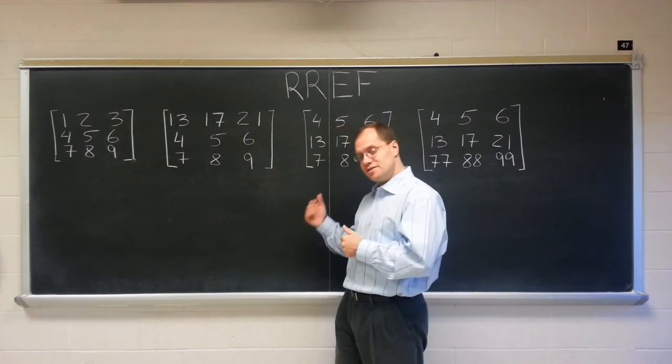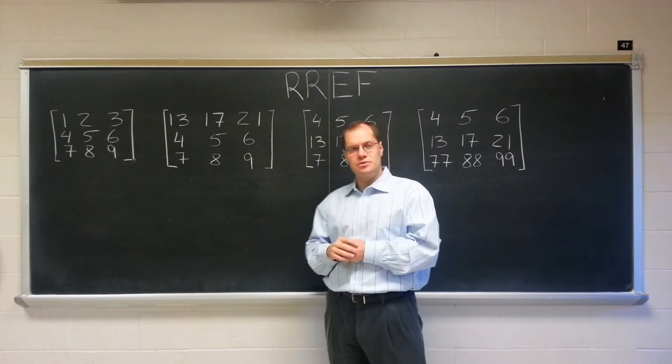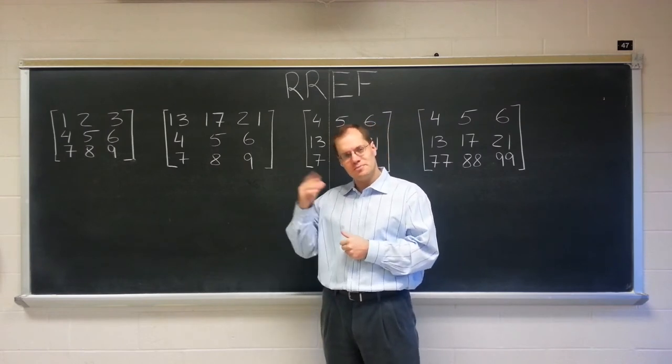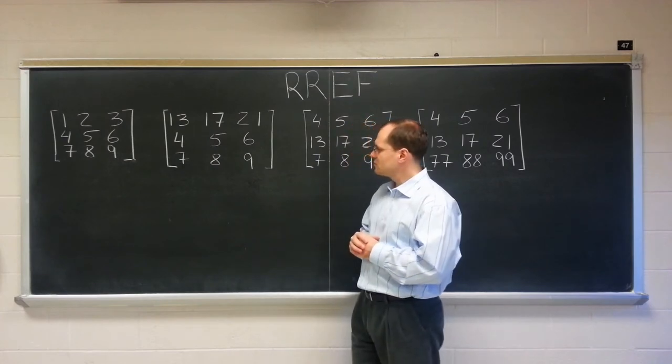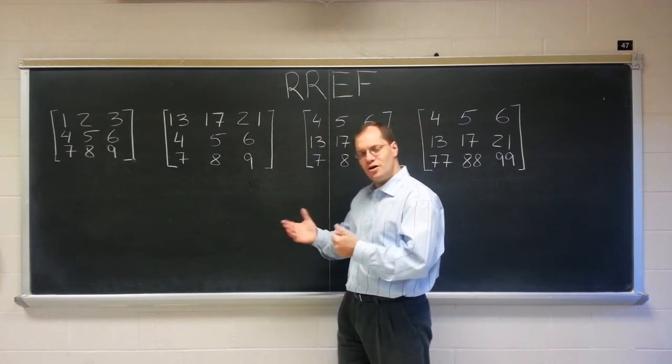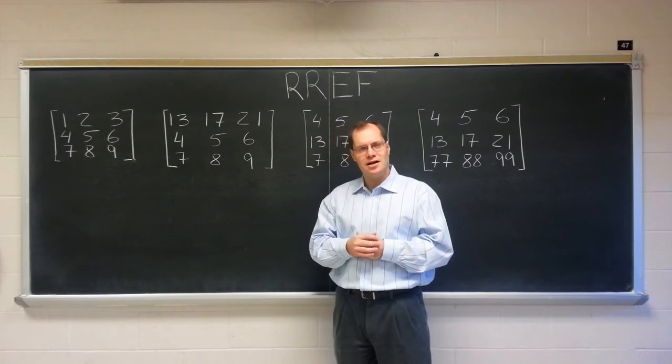And the null space, which is part of the general solution, you should always explain to yourself why that is the case, is also all about the relationship among the columns.